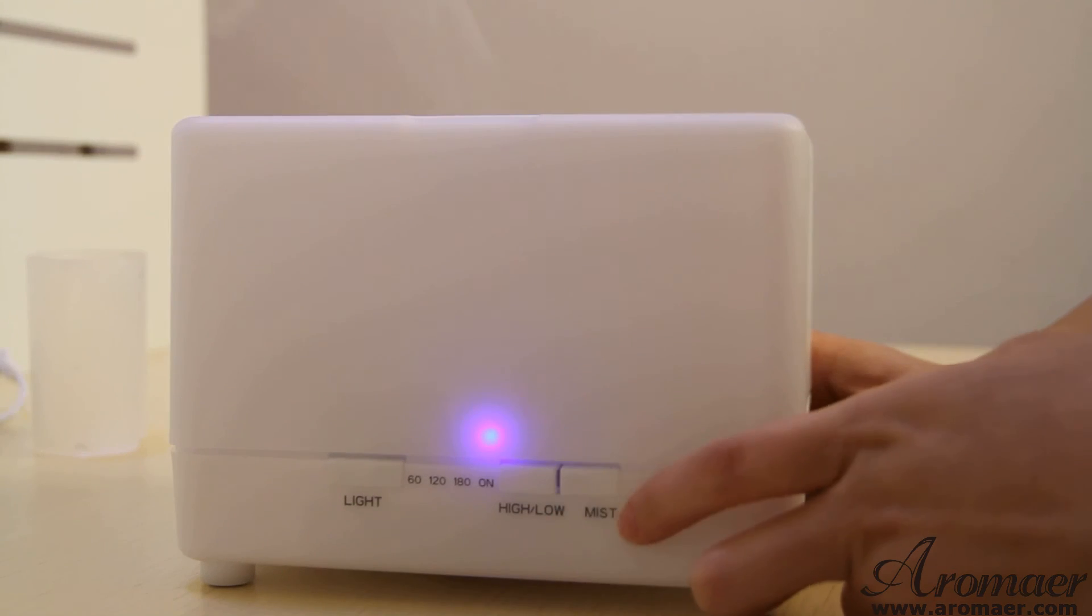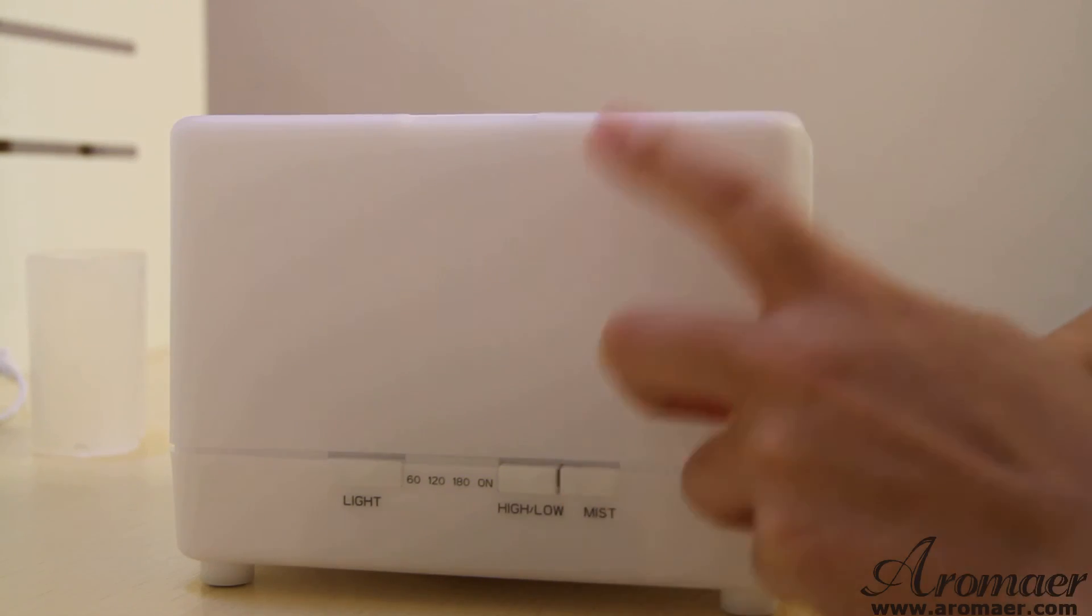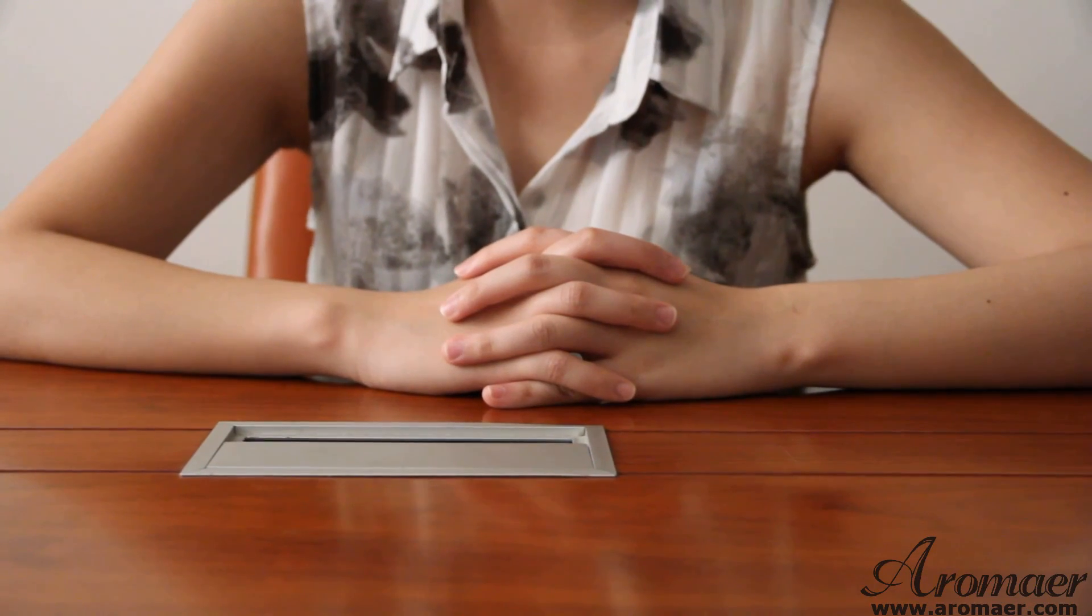And if you want to turn off the mist, just press the mist button for 3 seconds like this. 1, 2, 3 and it's off. That's all. Thank you for watching.